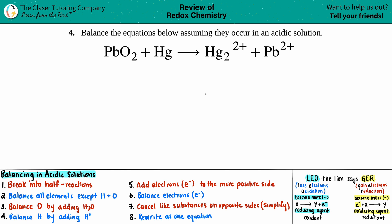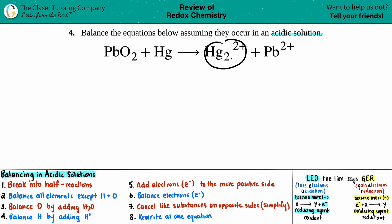Number four: balance the equations below, assuming they occur in an acidic solution. We have PbO₂ plus Hg yields Hg₂²⁺ plus Pb²⁺.